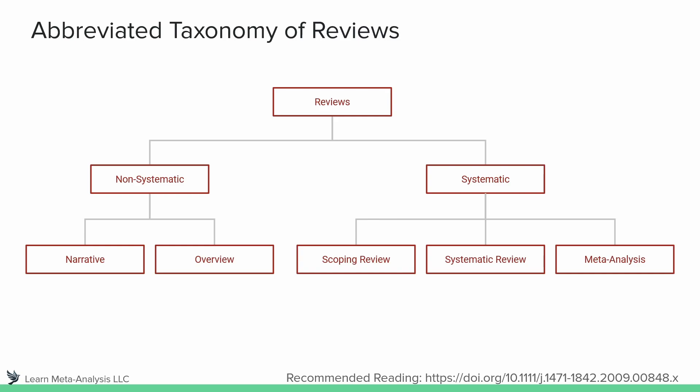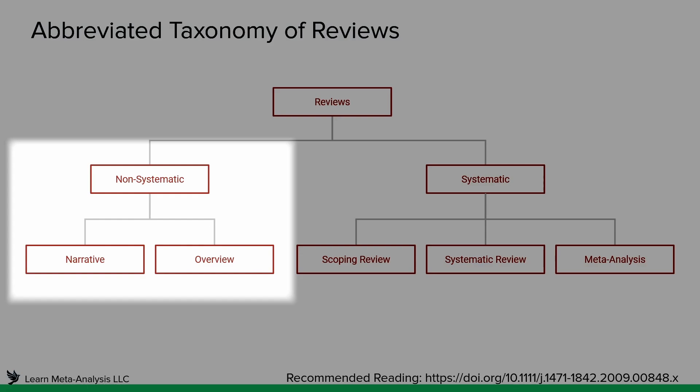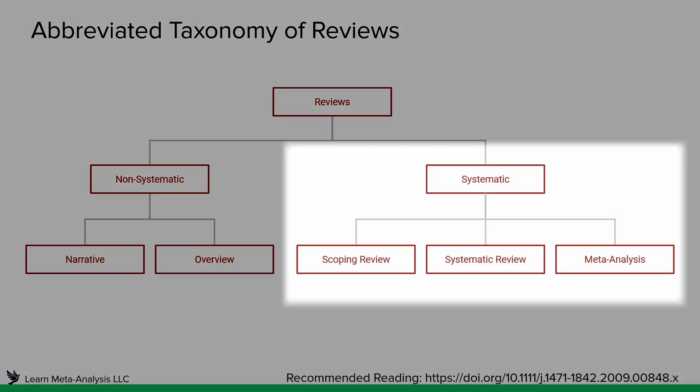This is a visual representation of a really abbreviated version of a taxonomy of reviews. At the top, you can see we have this really big umbrella of reviews. Over on the left, we can see that there are some that are non-systematic — things like a narrative review or an overview paper.